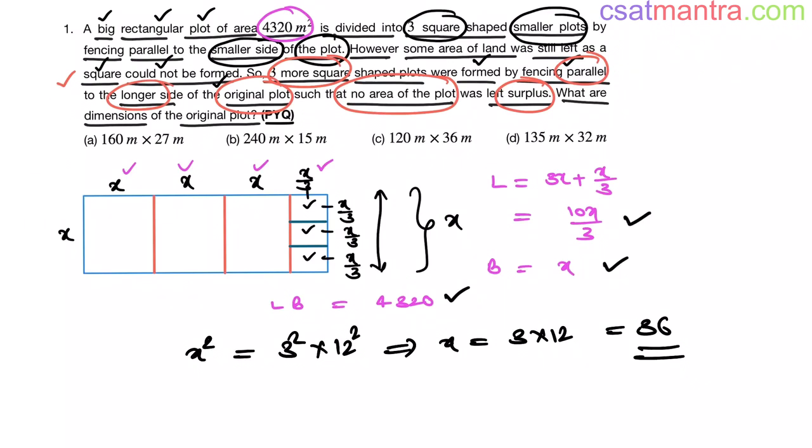So our breadth is 36. So our answer is C. Breadth is 36. You need not find out the length. Otherwise you can find out from this formula: 10 into 36 by 3. 3 1s are 3, 12s are, that is 120. So the dimensions of original plot are 120 meter into 36 meter.